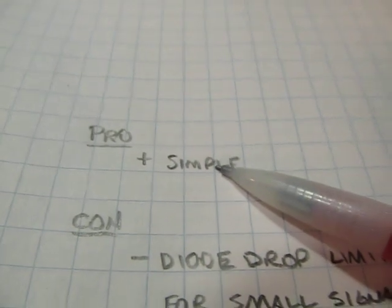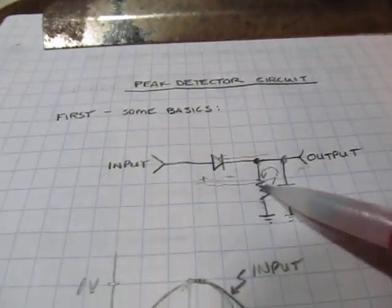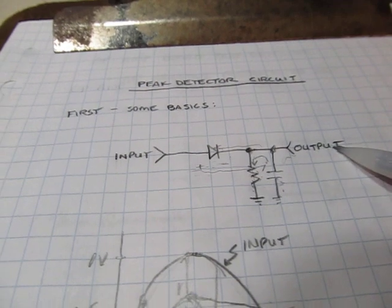So what are the pros of this circuit? It's really simple. You know, three components. Sometimes you don't even need the resistor because the circuit that's looking at this thing might draw enough current to bleed that cap.